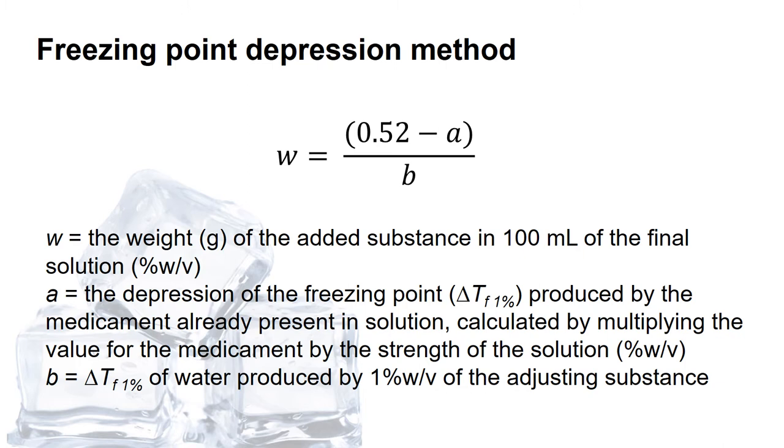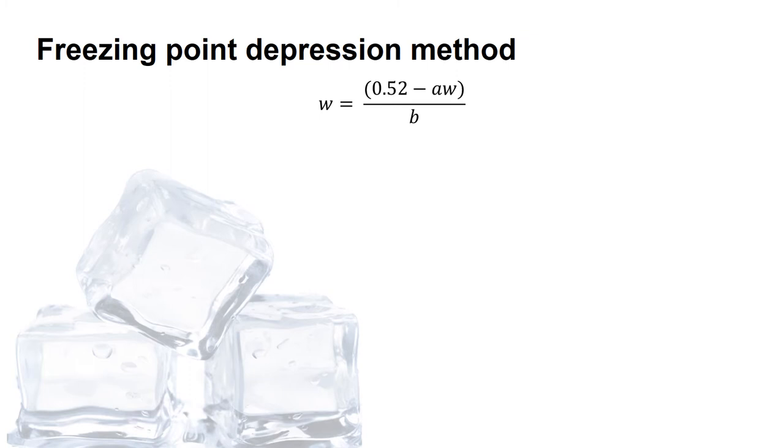And this is how freezing point depression method is derived from. It gives you these equations: w, the weight of the added substance in 100 mL of solution, equal to 0.52 minus a, which is the freezing point depression produced by the substances already present in the solution, multiplied by the strength of the solution, and divided by b, the freezing point depression temperature of the adjusting substances or the added substances. Before we rearrange the equation, you have to be clear that a actually refers to the freezing point depression value multiplied with the concentration or the strength in percentage weight per volume.